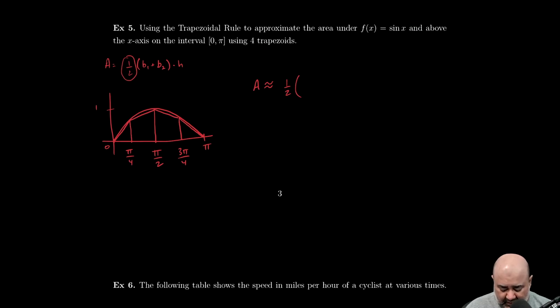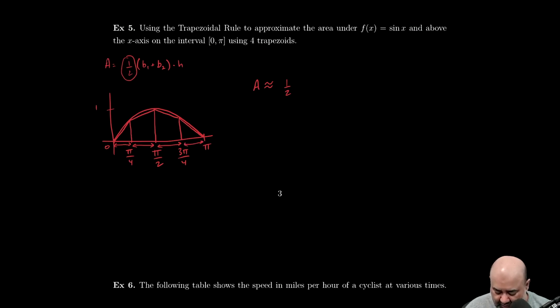However, the height is constant as well, because the height is really the width of these trapezoids here. So the height is always the same, so in fact we can factor out the height as well, which would be π/4. So one-half times π/4. And now really we just have base one plus base two, plus base one plus base two, plus base one plus base two, and so on.